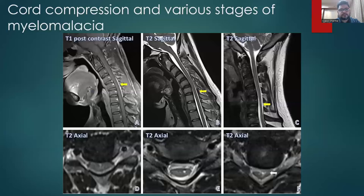The next set of images shows cord compression and various stages of myelomalacia. Images A and D show cord compression without abnormal cord signal intensity. Images B and E show cord compression with abnormal cord signal intensity, whereas Images C and F show cord compression with cord atrophy.